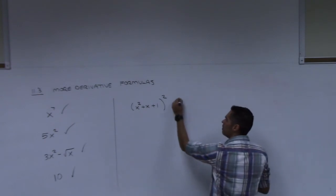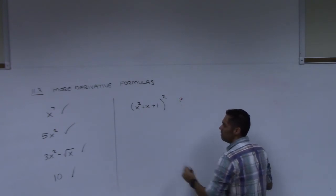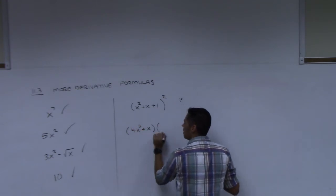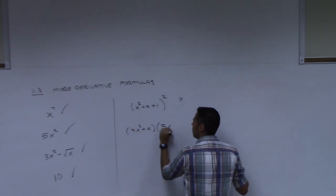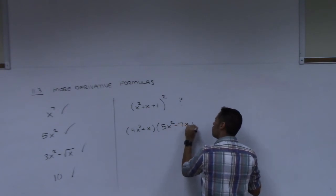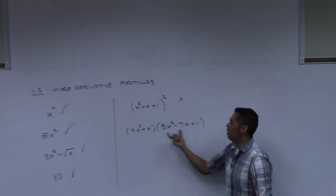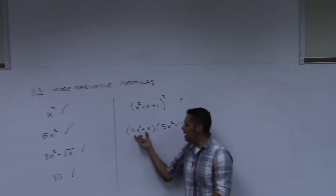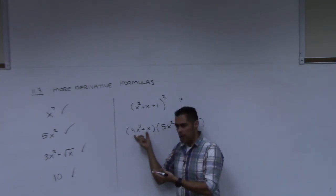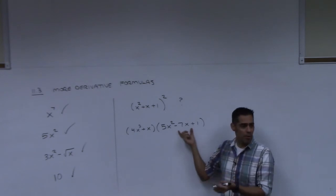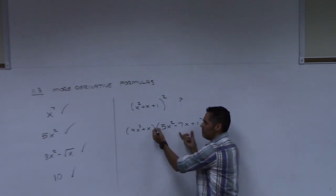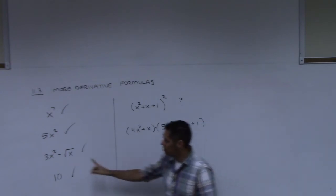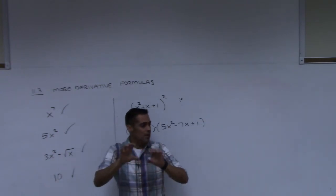So right now, I don't really have a way of dealing with that. If I had something like 4x to the third plus x times another crazy thing over here, x squared minus 7x plus one, if I had those two things being multiplied together, I don't have a way of doing this. Now, you could do that by itself, couldn't you? And you could do that by itself. But unfortunately, when it comes to derivatives, if you have a product, you cannot just do these separately. If you have addition and subtraction, you can do them separately, but not when you have products.